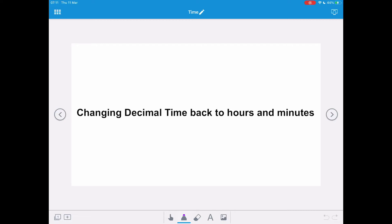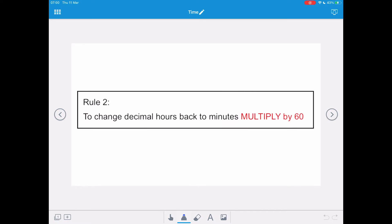In this video we're going to look at changing decimal time back to hours and minutes and then using the time equals distance over speed formula to work out time. Now the rule for changing decimal hours back to minutes is to multiply the decimal part by 60.